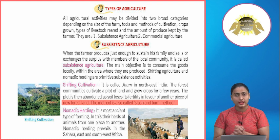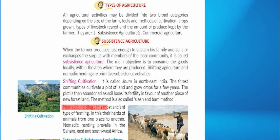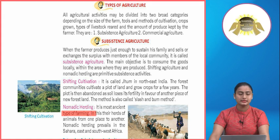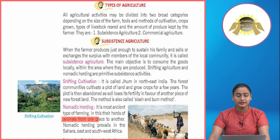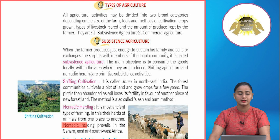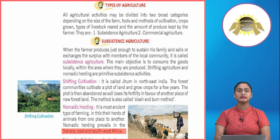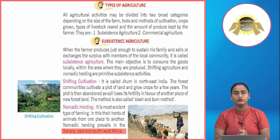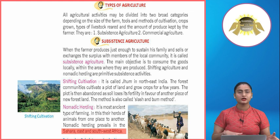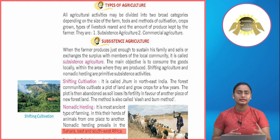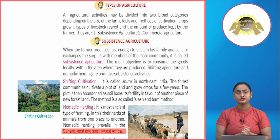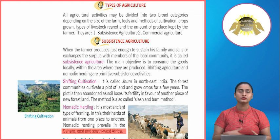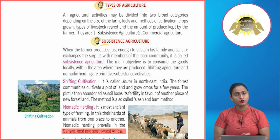Nomadic herding is the most ancient type of farming. In this, herds of animals are moved from one place to another. Nomadic herding prevails in the Sahara and East and South West Africa. The nomads take their animals from one location to another, searching for pasture land, and they have no settled life.